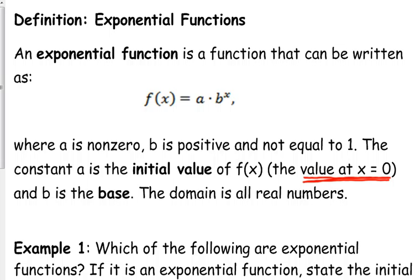We call a the initial value of the function. And the initial value is, for any function, the value at x equals 0. So when x is 0, b to the 0 is 1. That's why a becomes the initial value. b is what we call the base. The domain of an exponential function is all real numbers.